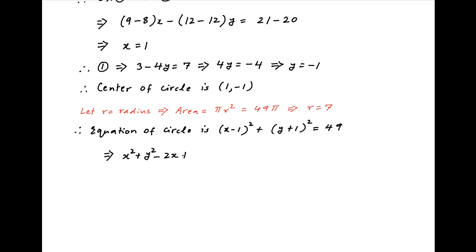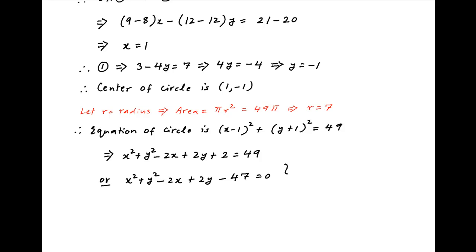Expanding the left-hand side, we get x squared plus y squared minus 2x plus 2y plus 2 is equal to 49, which can be written as x squared plus y squared minus 2x plus 2y minus 47 is equal to 0, which is the required answer.